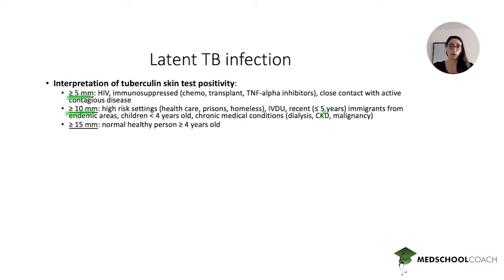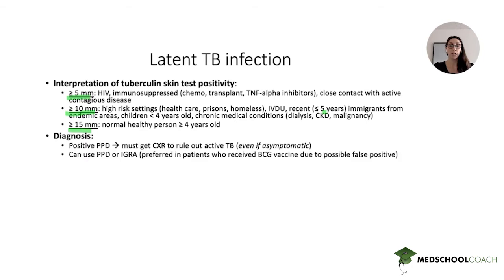Finally, in a normal healthy person four years or older, we use a threshold of 15 millimeters. In terms of diagnosis, a positive PPD or tuberculin skin test means we must get a chest X-ray to rule out active TB — even if the patient is completely asymptomatic. This is a high-yield point: even in the absence of any symptoms, a positive PPD warrants a chest X-ray.